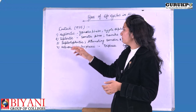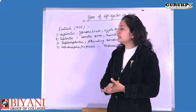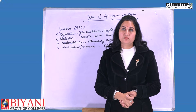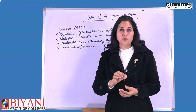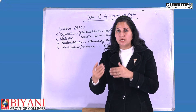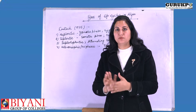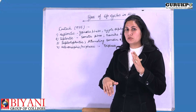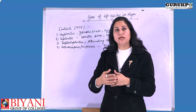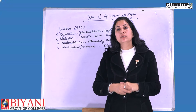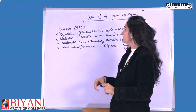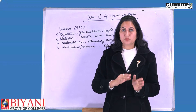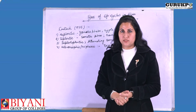The next type of life cycle is the diplontic type, in which the diploid phase overmasks the haploid phase. Here, most of the time the plant remains in the diploid phase; only at the time of gamete formation does it show the gametophytic generation.